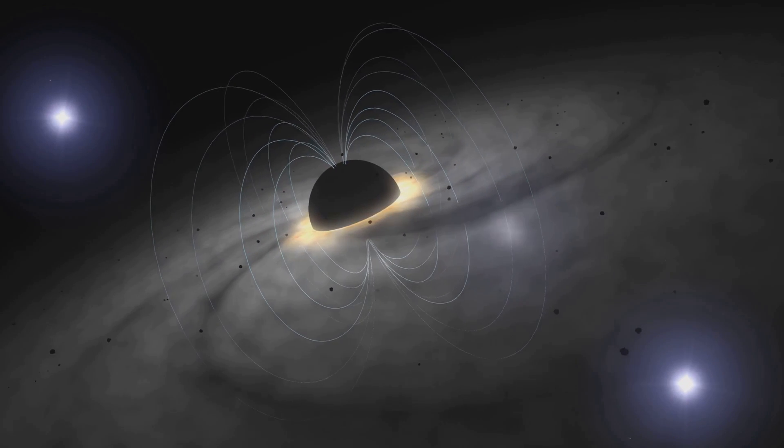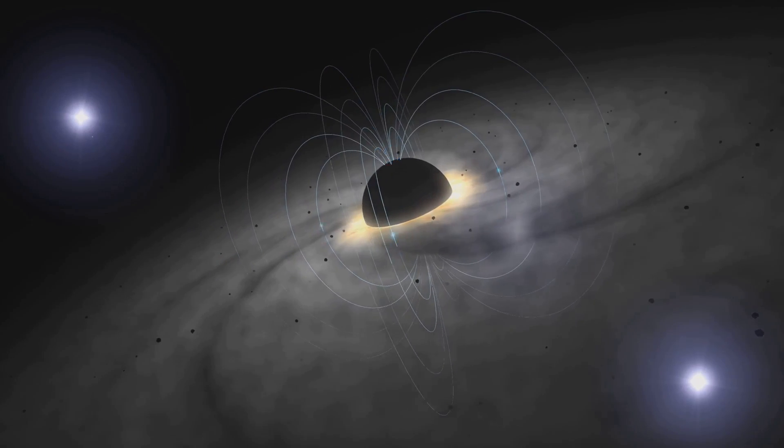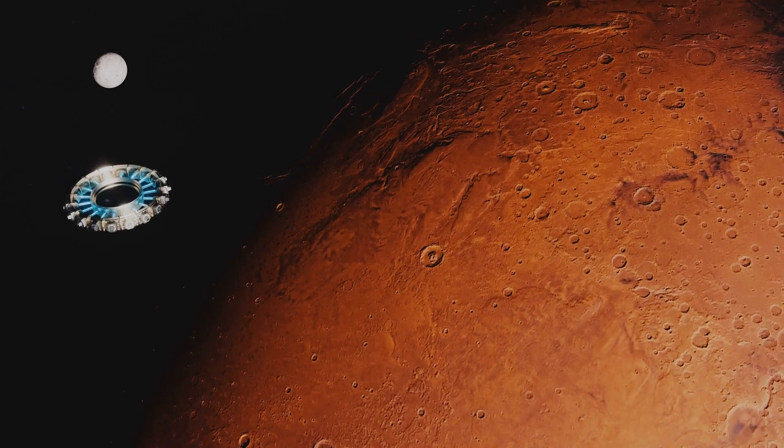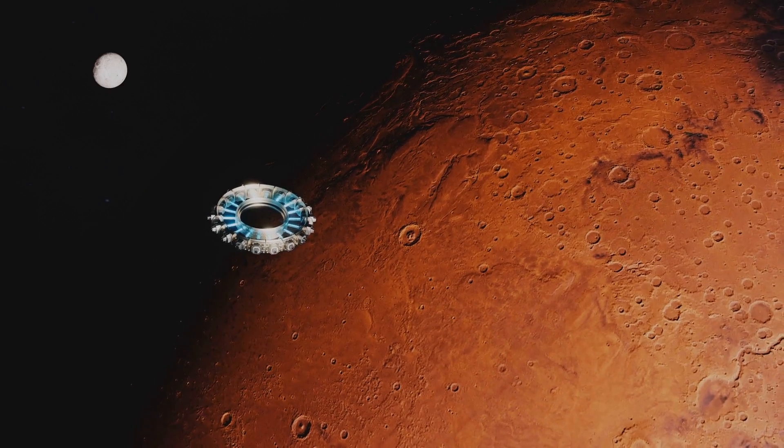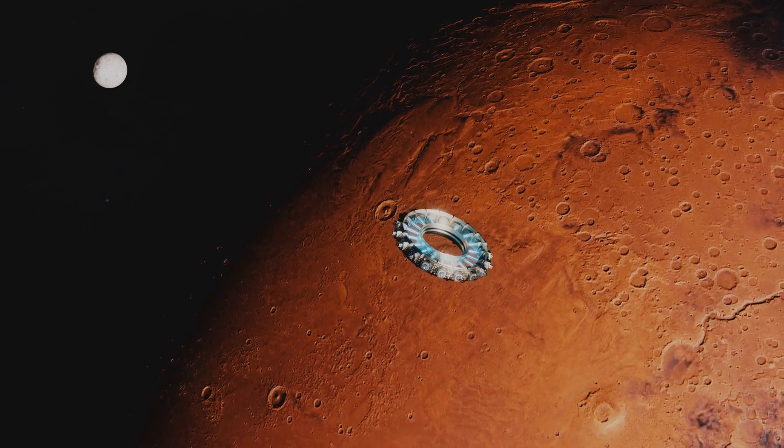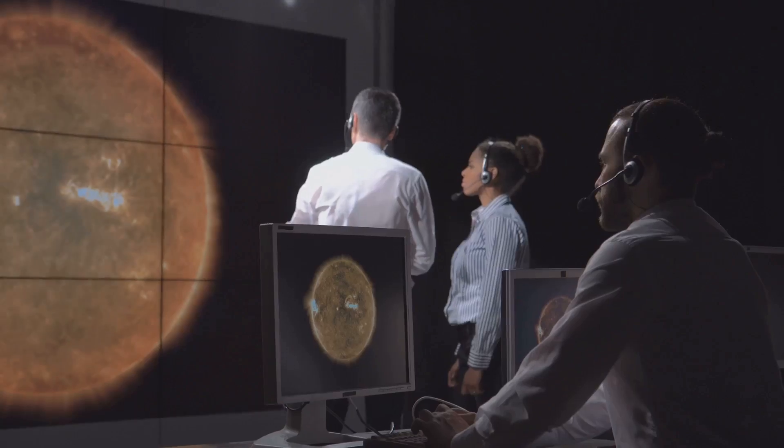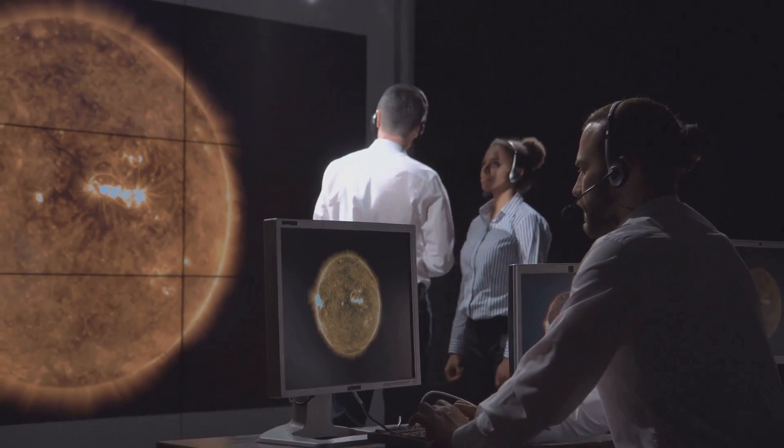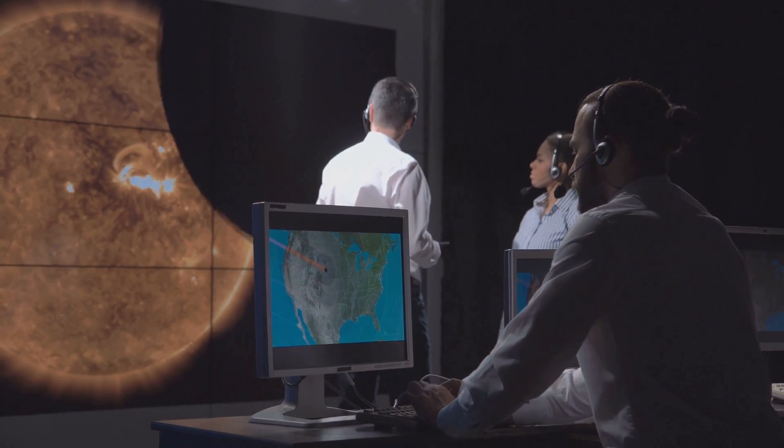These theories, while intriguing, are not definitive answers. Each one has its merits and drawbacks, and none can fully explain the enigma of Mercury's magnetic field. So, as it stands, we are left with more questions than answers. What is the true nature of Mercury's magnetic field? What does it tell us about the planet's history and evolution? And what might it reveal about other celestial bodies with surprising magnetic fields? The mystery of Mercury's magnetic field continues to baffle scientists, adding another layer to the planet's intrigue.